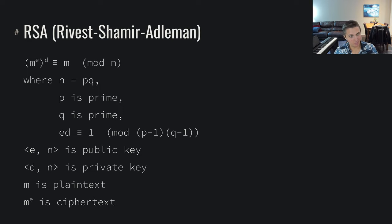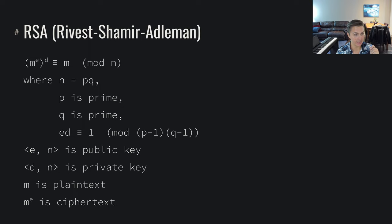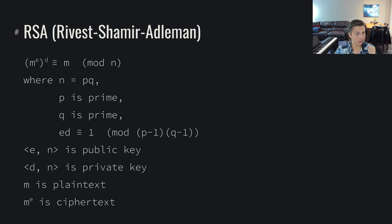To perform asymmetric encryption using RSA, we release e and n as public keys — they can be released to the world. We keep d and n private. m is the plaintext, and m to the e is the ciphertext. If someone wants to encrypt something for us, they take their message and raise it to e, the public key exponent. To decrypt, we raise m to the e, now to the d, and arrive back at m. We have d as a private value, allowing us to decrypt while others can publicly encrypt for us.